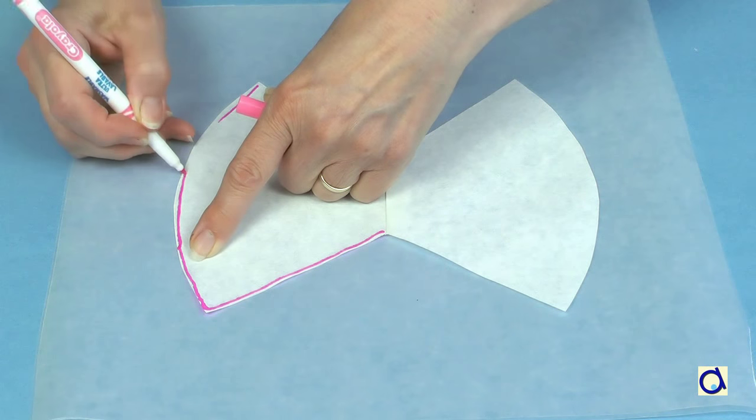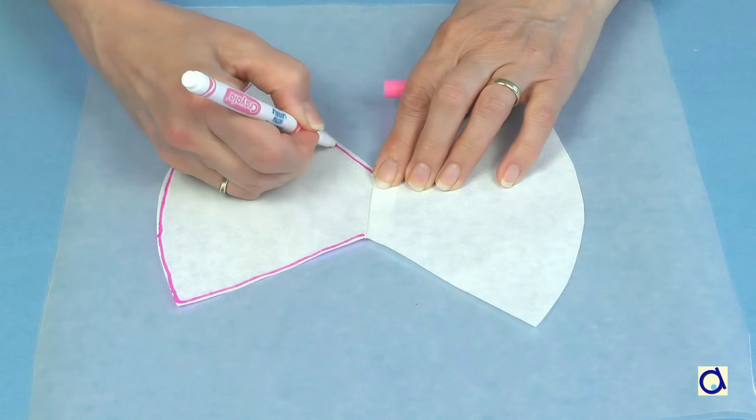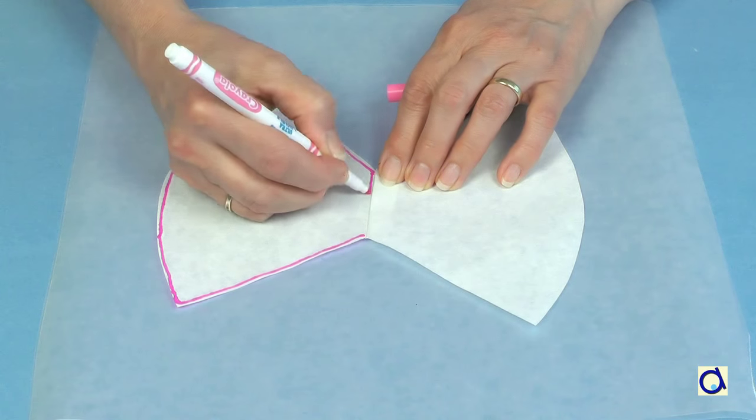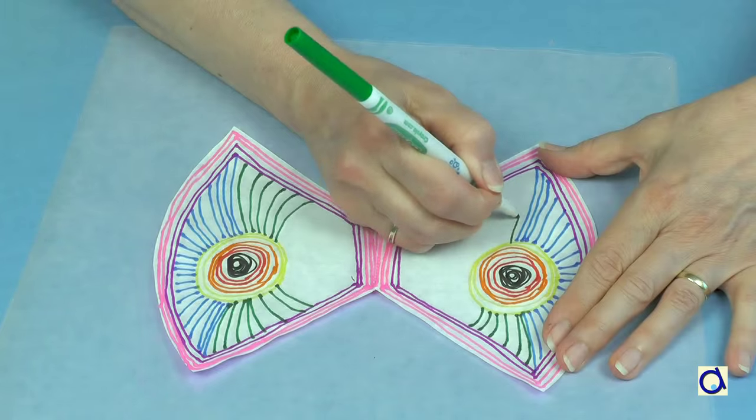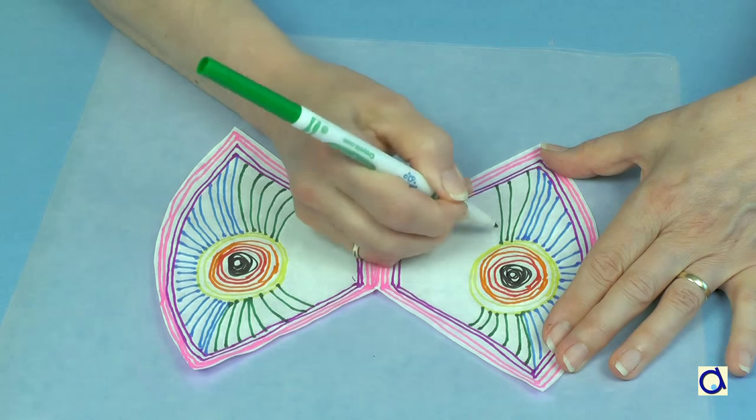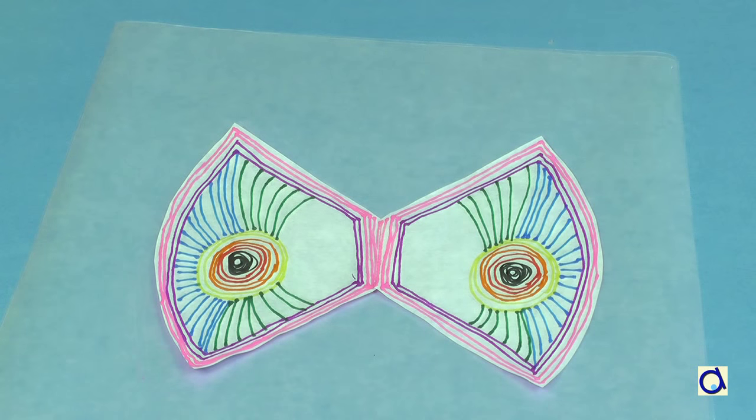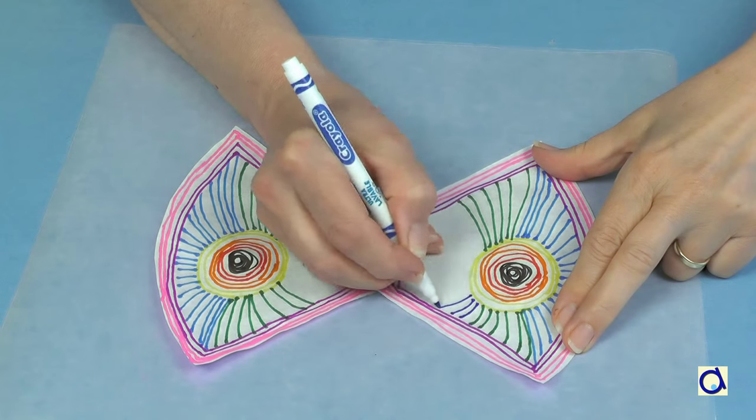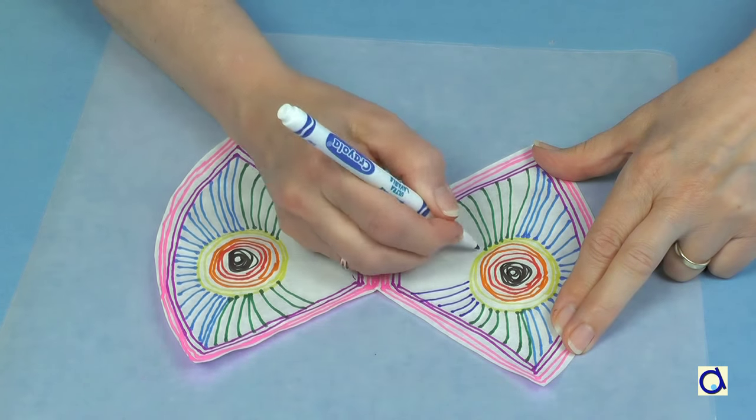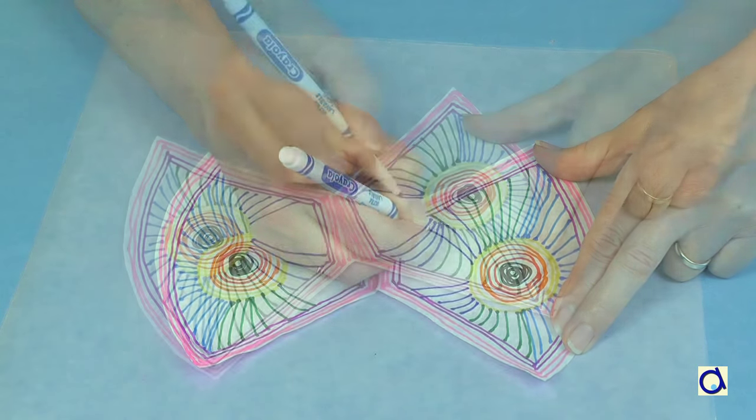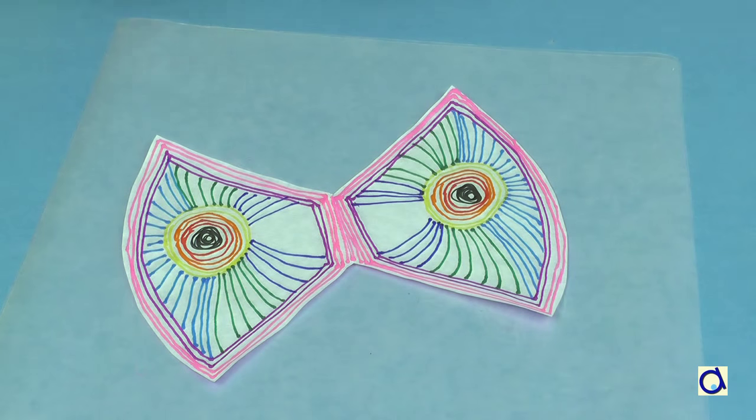You could paint the wings as I did in my video about the butterfly made with basket-type filters. In this case, I will show you how to color the wings using washable markers. It is not necessary to cover the whole surface. Draw straight lines, wavy lines, zigzags or circles - in short, draw whatever you want.